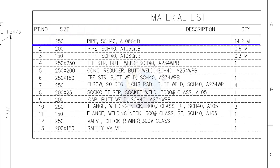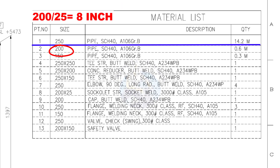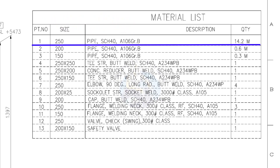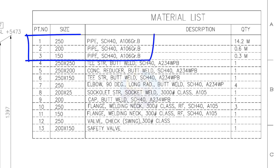Let us try another example. What is the inch size of the 200 NB pipe? Divide 200 by 25. The answer is 8 inches. Parts number 1 to 3 — all these pipes are schedule 40.